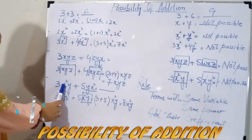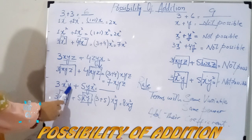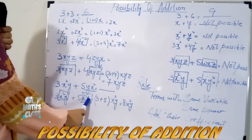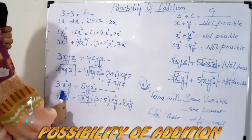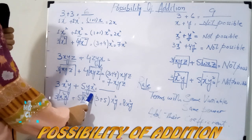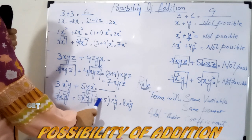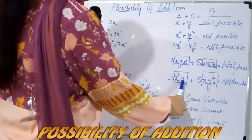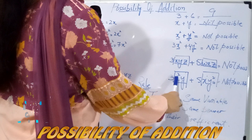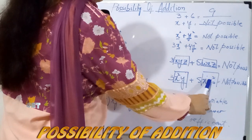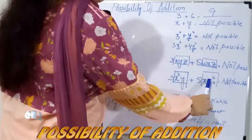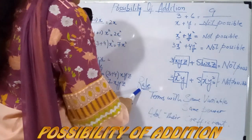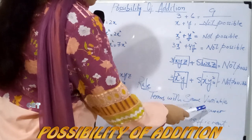In this example, the variable part consists of more than one variable but with some power: 3x square y plus 5yx square. Rearrange alphabetically to get 5x square y. Match the term: x with power 2, y with power 1 in both. The variable part is the same, so simply add the coefficients — the answer is 8x square y. If instead you have x with power 2 and y with power 1 versus x with power 1 and y with power 2, the power distribution differs, so you cannot add them. The rule: terms with the same variable and the same power — simply add their coefficients.